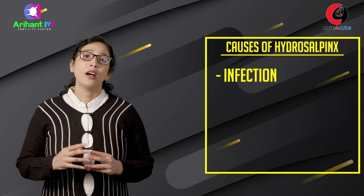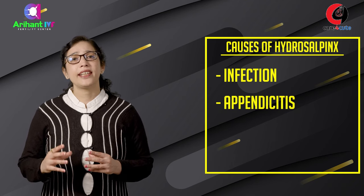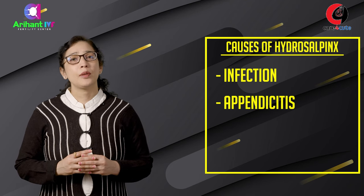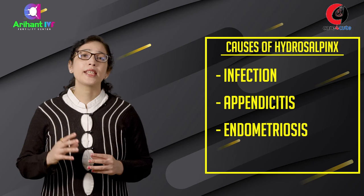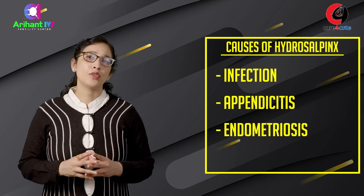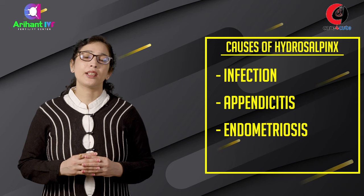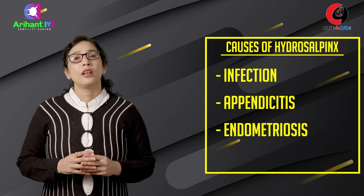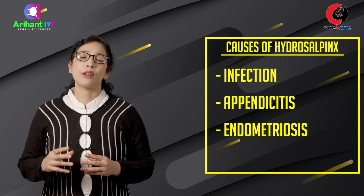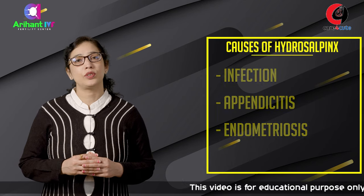In this way, blocked tubes from infection lead to fertility problems. Other causes include appendicitis or appendix rupture, or endometriosis, which can alter the pelvic anatomy of the tube, causing tube blockage and fluid collection. Sometimes, surgery on the pelvis — especially involving the uterus, fallopian tubes — can also lead to hydrosalpinx.